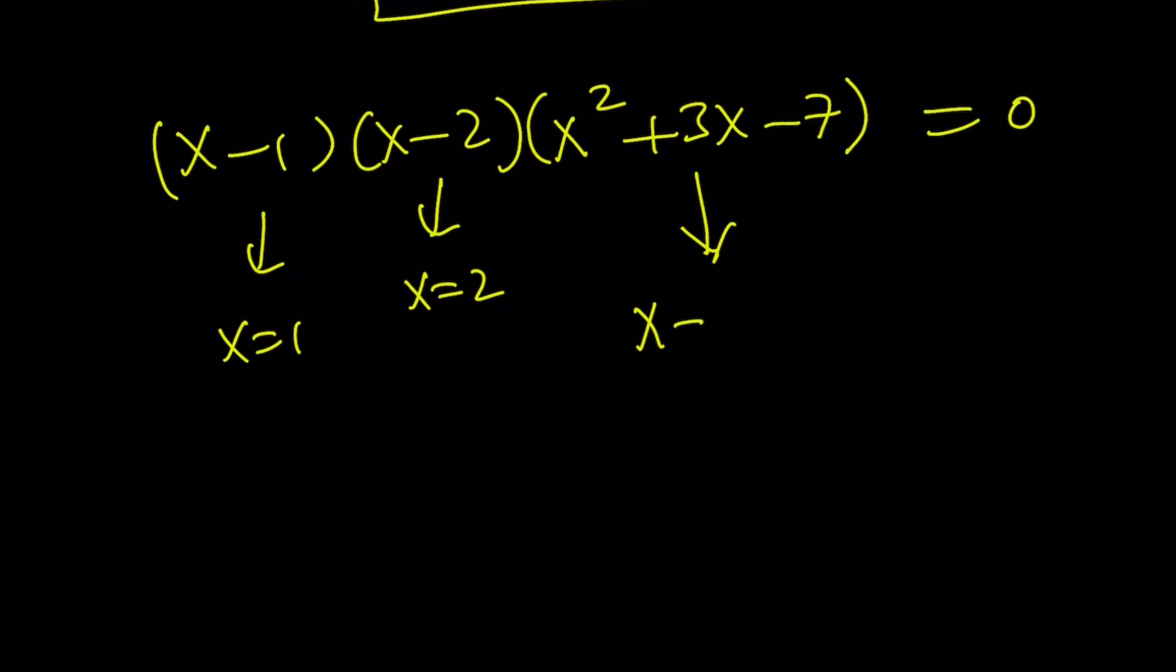And if you use the quadratic formula, negative b plus minus the square root of b squared minus 4, you see all that stuff, you're going to get the square root of 37 and all over 2. So those are the solutions.